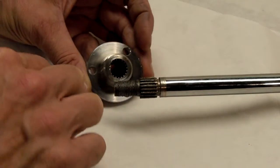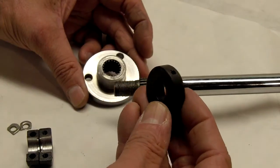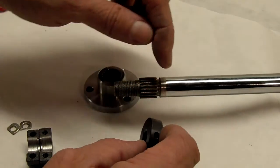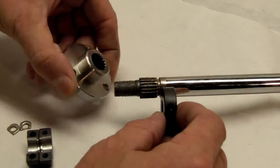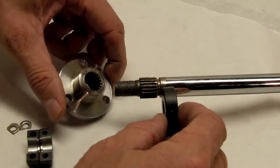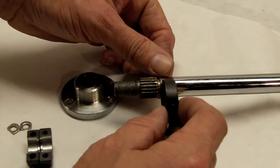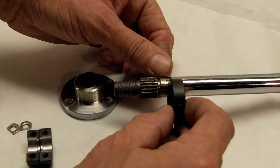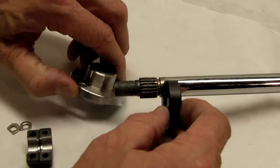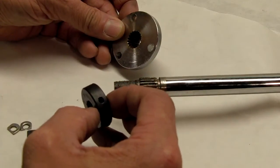One thing you can do is take a five-eighths lock collar and place it here behind the hub and that can work. The problem with that is it's just friction holding it on the shaft and it can slide down the shaft because you're putting a lot of torque on this nut on the end.